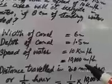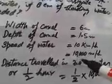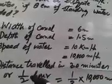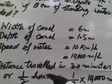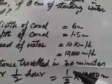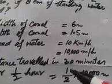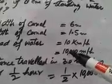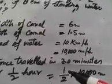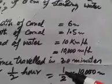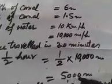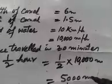The distance traveled in 30 minutes needs to be found. 30 minutes is half an hour, i.e., 1/2 hour. So the distance is 1/2 into 10,000 meters, which equals 5,000 meters.